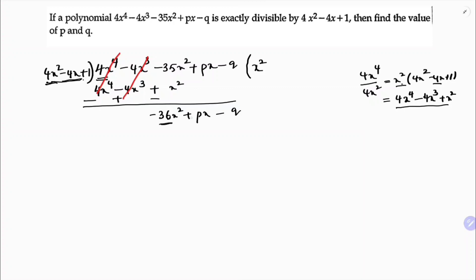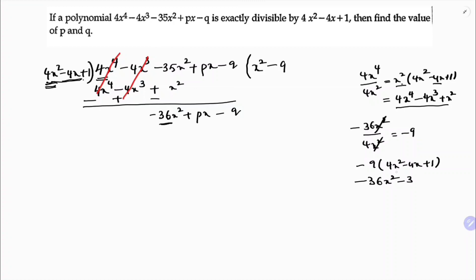Now take the new first term: minus 36x², and divide by the first term of the divisor, 4x². The x² terms cancel, and 36 divided by 4 gives 9, so we get minus 9. Multiply minus 9 by the divisor 4x² minus 4x plus 1, giving minus 36x² plus 36x minus 9.